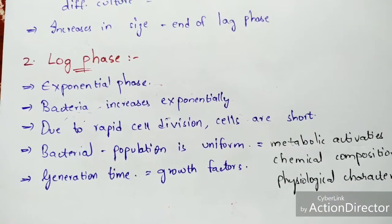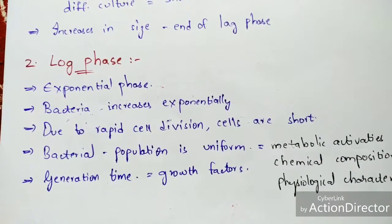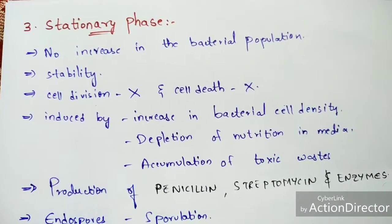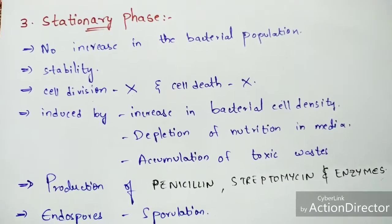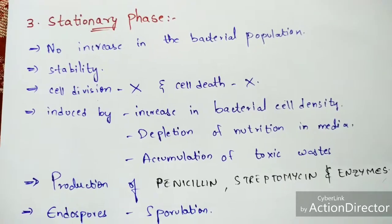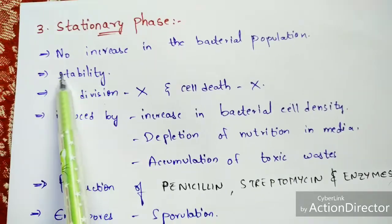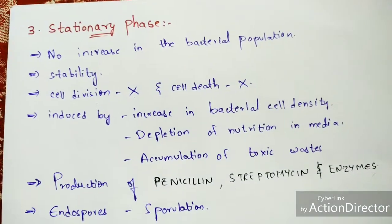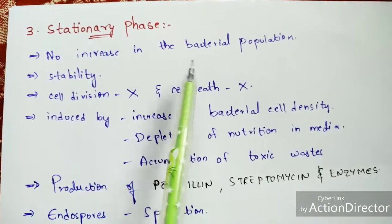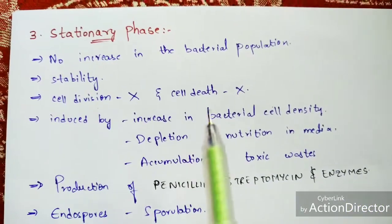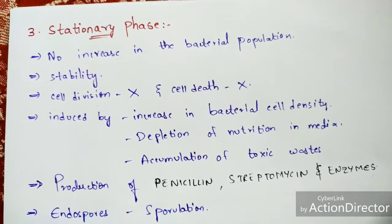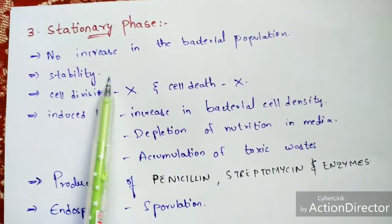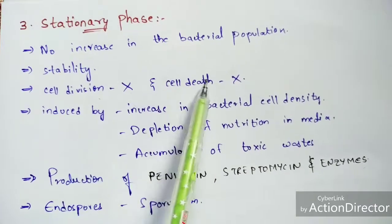After rapid cell division is completed in the log phase, the bacteria enter the stationary phase — the third phase. The stationary phase can also be called the stable phase because there is no increase in bacterial population. The cells formed do not attain maturity in this phase, so they do not divide. Cell death also does not take place, and stability is maintained.